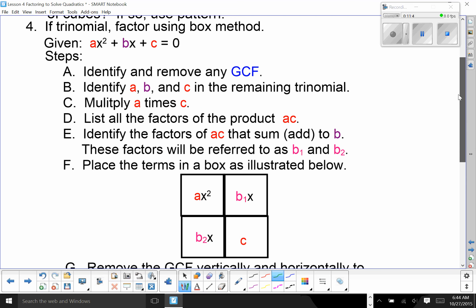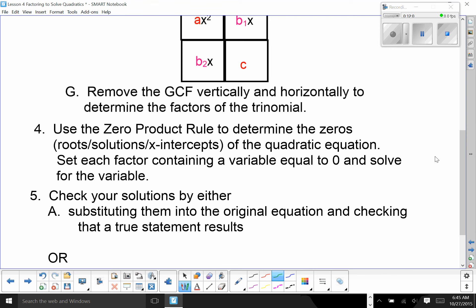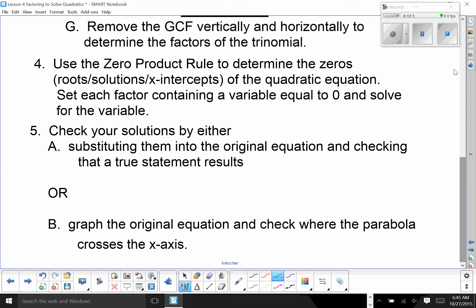Finally, once you have it factored, use the zero product rule to determine the zeros, roots, solutions, x-intercepts of the quadratic equation. To do that, you set each factor containing a variable equal to 0 and solve for the variable. You can check your solutions by either substituting them into the original equation and checking for a true statement, or graphing the original equation and looking to see where the parabola crosses the x-axis. That's it.